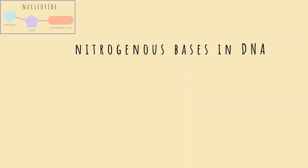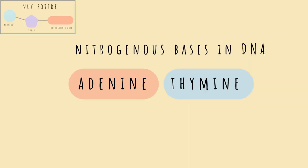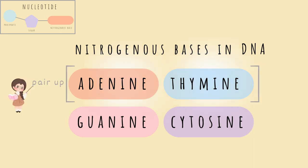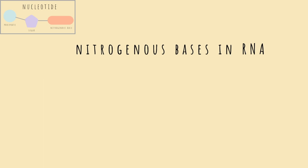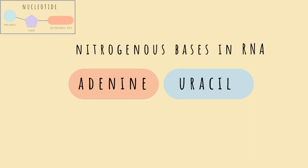The nitrogenous bases in DNA are adenine, thymine, guanine, and cytosine. Adenine and thymine pair up, as do guanine and cytosine. These pairs are referred to as a base pair. The nitrogenous bases in RNA are the same with one exception — we have adenine, uracil, guanine, and cytosine.